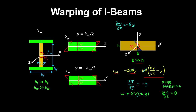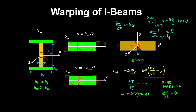Therefore, there is no warping rotation at y equals zero, and the largest warping rotation occurs at the top and bottom of the section. The partial of w with respect to x at y equals h/2 is minus theta times h/2 — negative meaning clockwise. Similarly, the warping rotation at y equals minus h/2 is minus times minus, which is plus theta times h/2, representing a counterclockwise rotation at the bottom of the section.